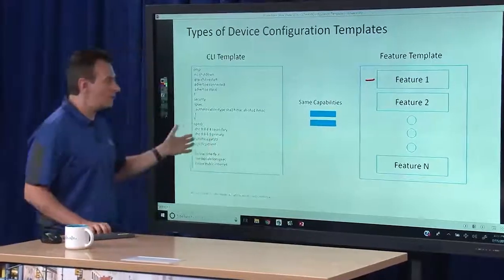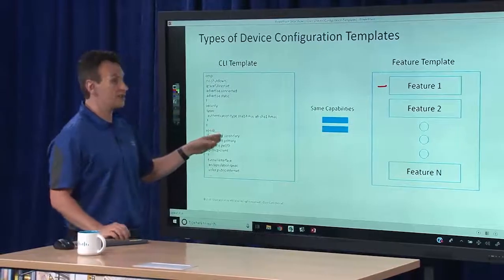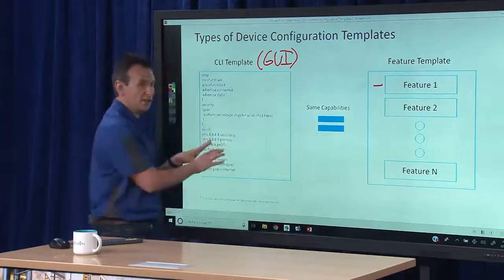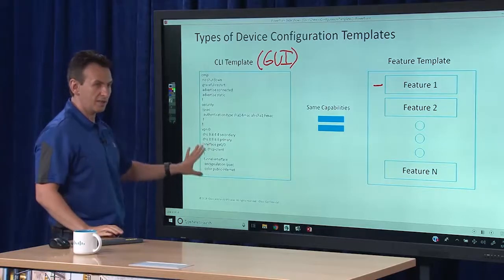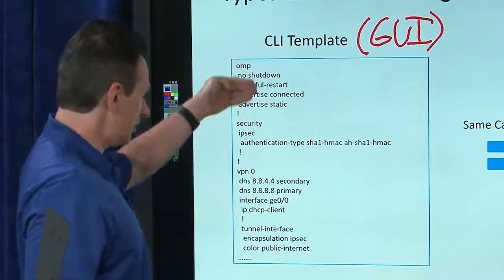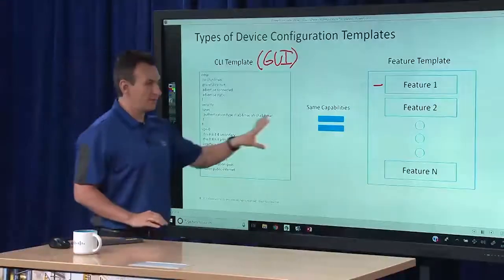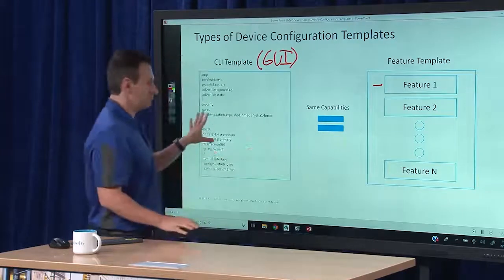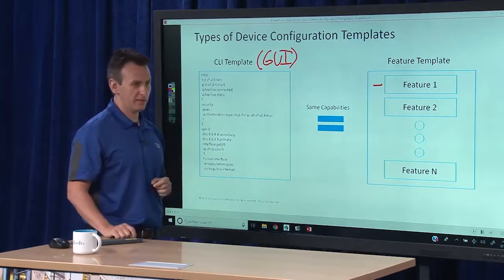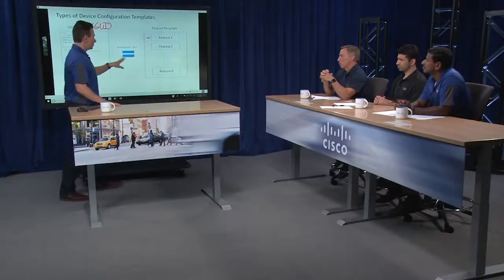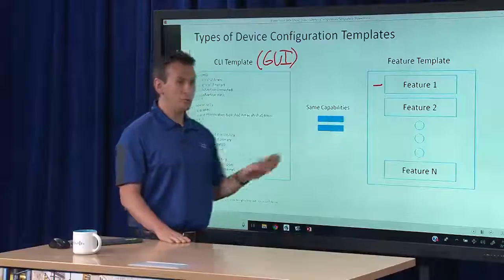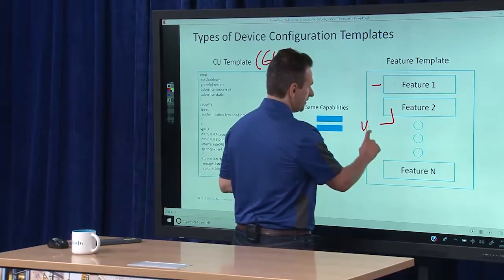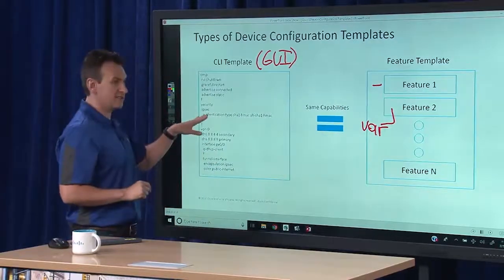How are these different? Obviously the feature template is GUI-driven. The CLI template is inside the vManage GUI as well — so you're not going into the device. It is still a config defined in the graphical user interface of vManage, yet it looks like the CLI format. Both are in vManage but look different — one is a completely click-through driven interface, the other is typed CLI config in running-config format. The capabilities are identical. Anything you can do in one you can do in the other, including designating variables within the CLI template.